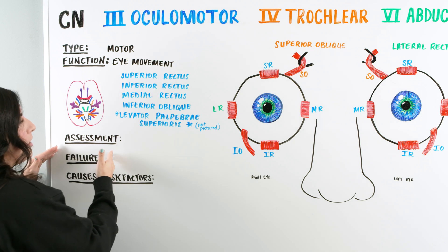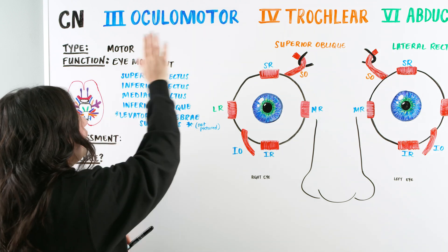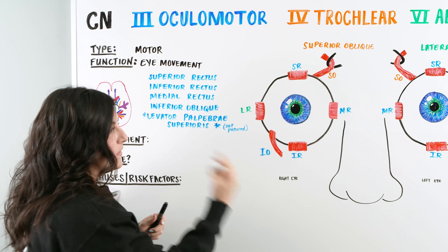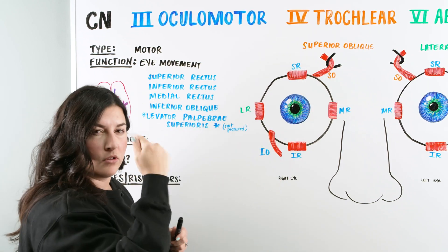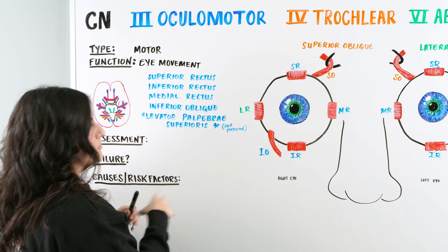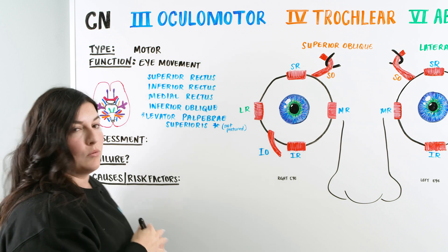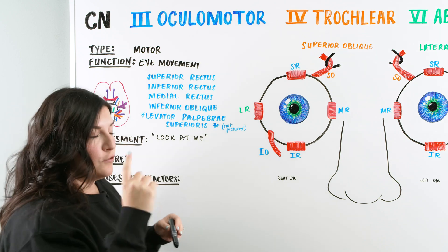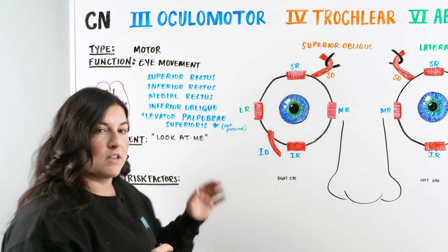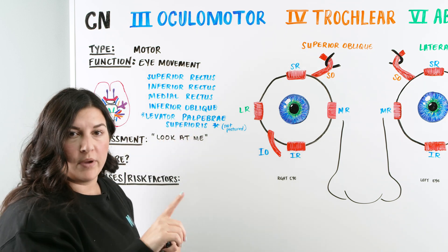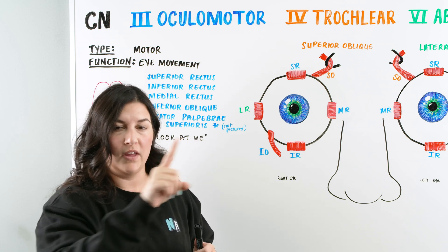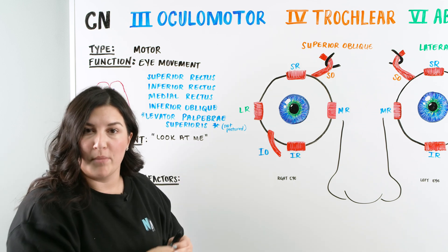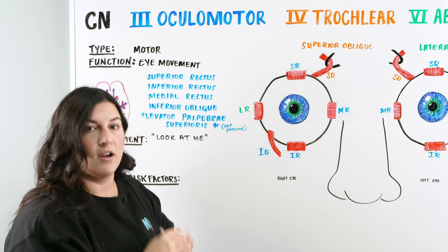Now let's talk about how we assess our patients. For the main portion of assessing ocular motor, trochlear, and abducens, there are a couple of assessments we do together. First, we ask the patient to look at us — do their eyes look equal, is there any drifting, does one look like it's turning in a weird way? We're assessing to make sure everything looks symmetrical and the eyes are doing what we ask. Next, we ask the patient to follow our finger without moving their head. We can do the H pattern or the star pattern, showing how all those different muscles are working together.